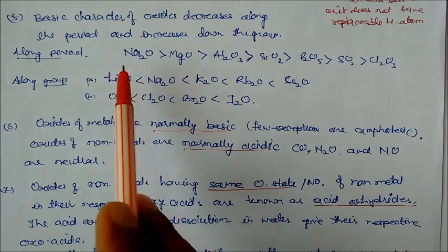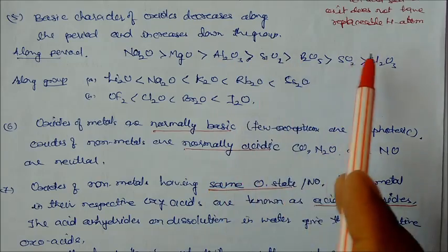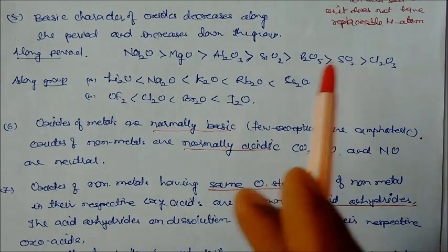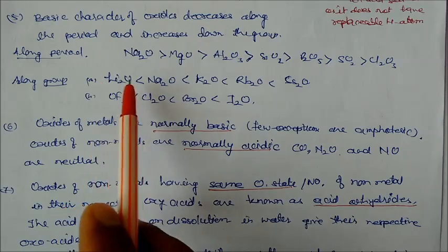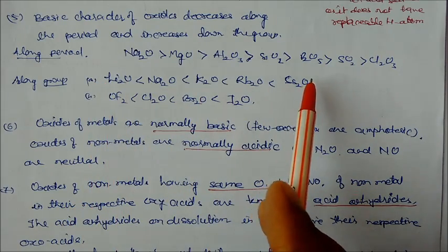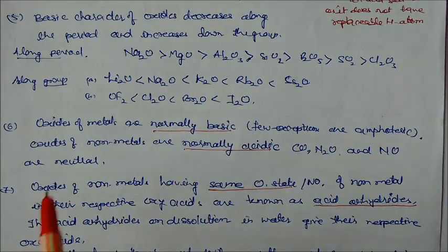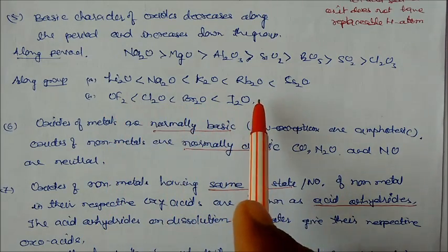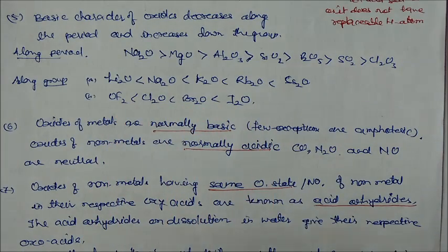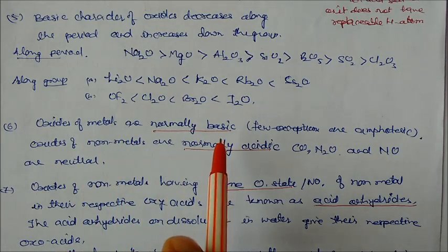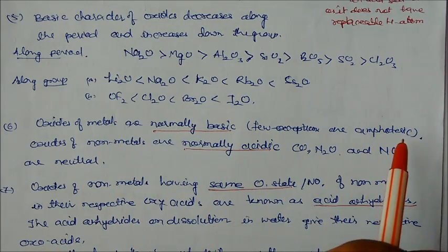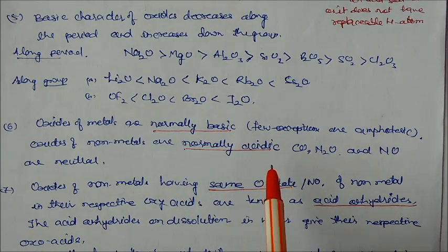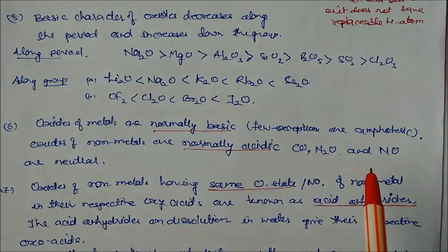Basic character of the oxides decreases along the period and increases down the group. Along the period, this is the oxide you can see: sodium, magnesium, aluminum oxide is increasing, so basic character is decreasing. That we already studied in lower classes. In the group again, we see size of the atoms increases, so that's why what happens? Its basic character increases. Similarly, two chlorines to beryllium also, again increasing oxide, so basic character increases.